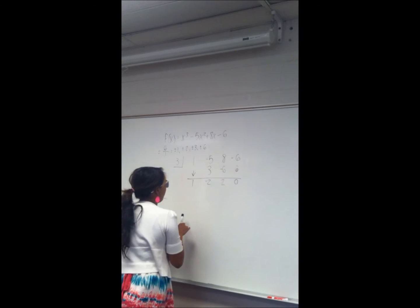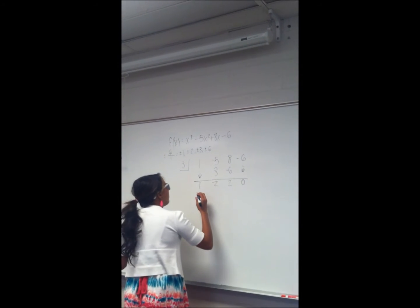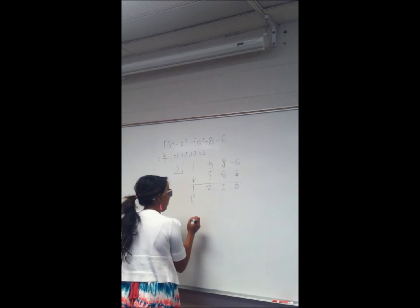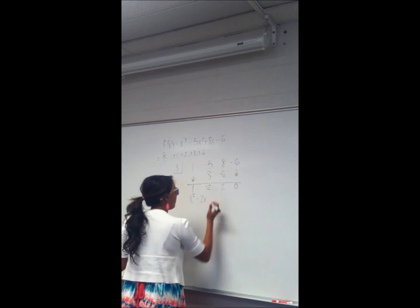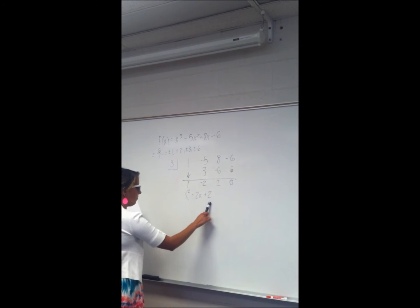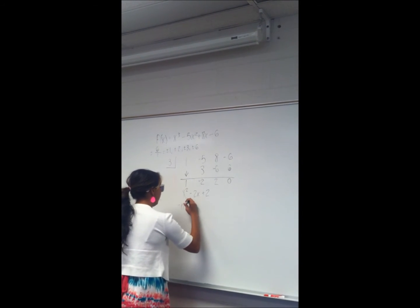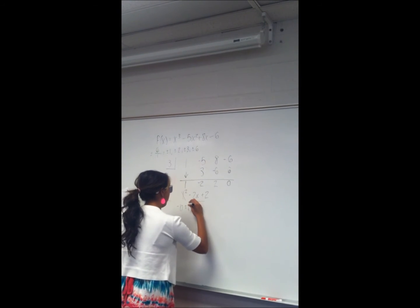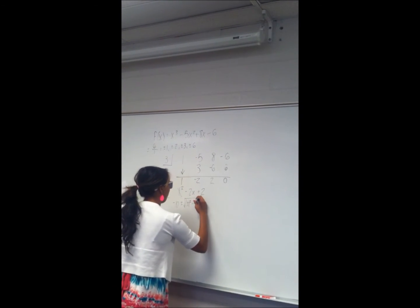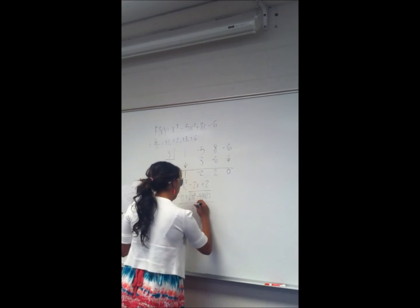So now that we know that three is a factor of f of x and it gave us this equation, we can put this equation back into a quadratic formula using these coefficients. So one x squared — so we just have x squared — minus two x plus two. Because there's no way to factor this using simple factoring, we're going to have to use the quadratic formula, which is the opposite of b plus or minus the square root of b squared minus four times a times c, divided by two times a.